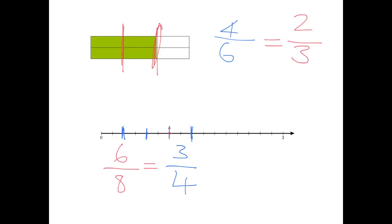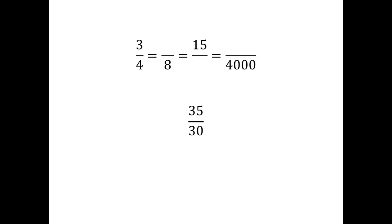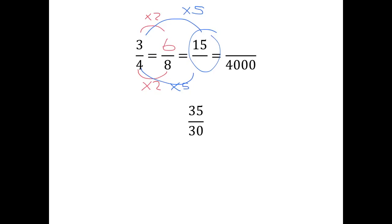We get equivalent fractions by multiplying or dividing the top and bottom of the fraction by the same thing. Let's look at how we can get a whole lot of fractions equivalent to three-quarters. To get from four to eight, you've multiplied by two, so you must do the same to the three and get six-eighths. For fifteen over twenty, you've multiplied the three by five, so the denominator must also be multiplied by five: four times five is twenty. And to get four-thousand in the denominator, you multiply by one-thousand, and three times one-thousand is three-thousand. So all these fractions are exactly the same number, just written in a slightly different way.